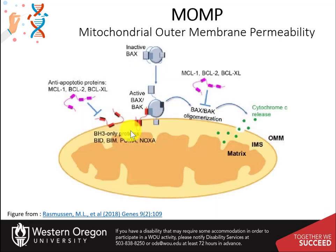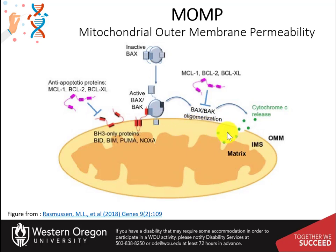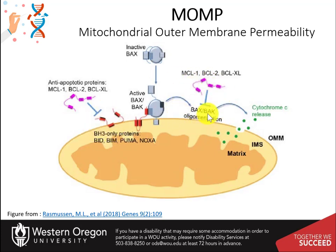After apoptotic stimuli, BH-3 only proteins activate BCL-2 associated X protein (BAX) and BCL-2 homologous antagonist killer (BAK), which undergo conformational change and insert into the mitochondrial outer membrane. BAX and BAK oligomerize to form pores, releasing cytochrome C from the inner membrane space into the cytosol. When cells are not undergoing apoptosis, the anti-apoptotic BCL-2 members prevent mitochondrial outer membrane permeabilization by sequestering BH-3 only proteins or by inhibiting BAX-BAK oligomerization.